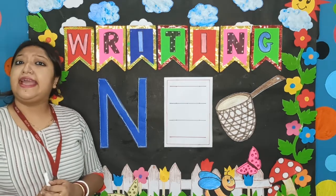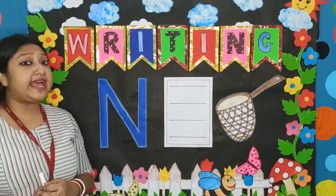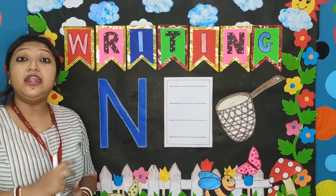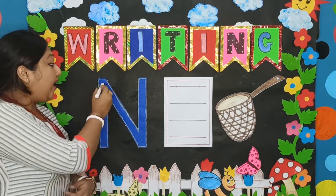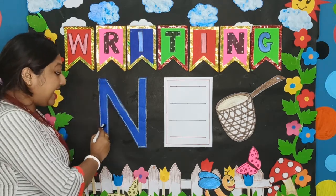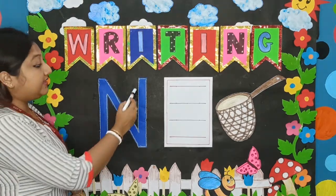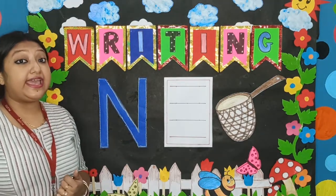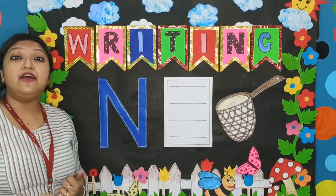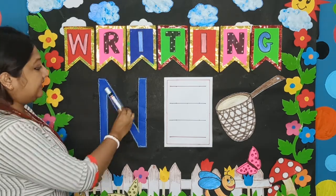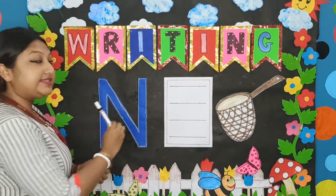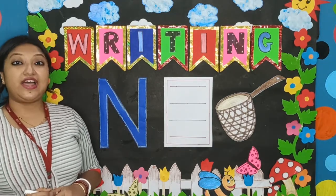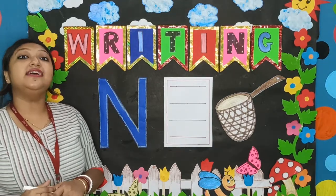Now, can you tell me how many standing lines you can see in this letter? Here are two standing lines. One is this standing line and the other one is this standing line. And in letter N, we have only one slanting line — only one slanting line. So today we will learn how to write the letter N.